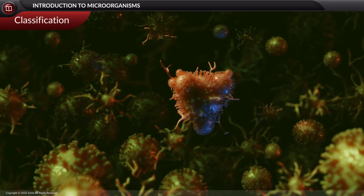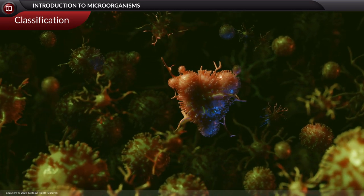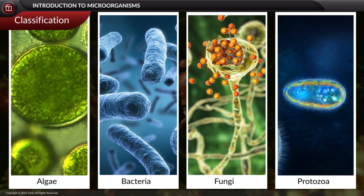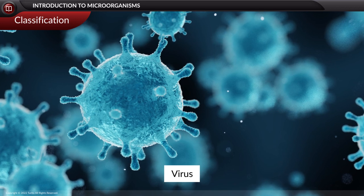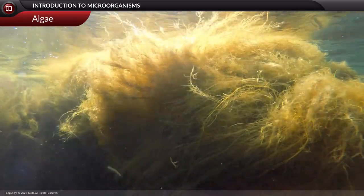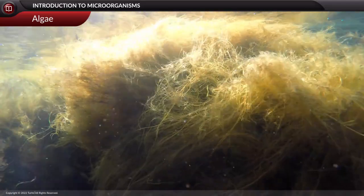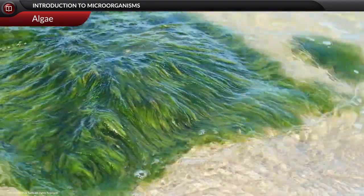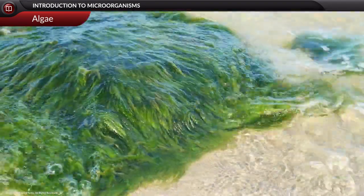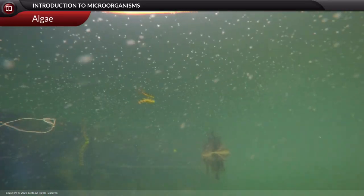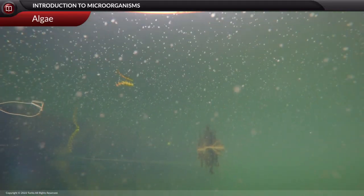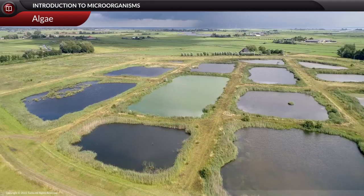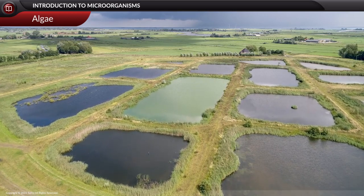Microorganisms are diverse in nature and include algae, bacteria, fungi, protozoa, and viruses. Algae are tiny, mostly single-celled organisms that are photosynthetic in nature. They pump most of the oxygen into the Earth's atmosphere, making algae life savers. However, some algae are harmful as they produce toxins and spoil water resources.